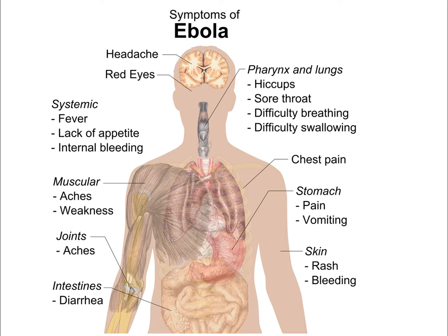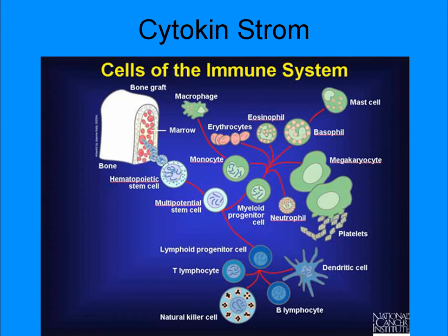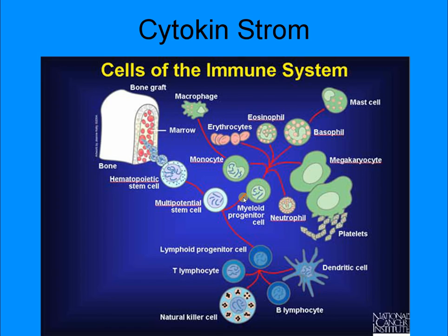The cytokine storm affects the muscular system, nervous system, digestive system, and circulatory system, as well as the joints. What ends up killing the person is not the virus itself but the immune system trying to kill the virus — the immune system ends up killing the host. The stronger the person's immune system, the stronger the cytokine storm. Older patients often die from internal bleeding but not from the cytokine storm itself, and they actually die slower than a stronger, healthier individual with a very strong immune system.